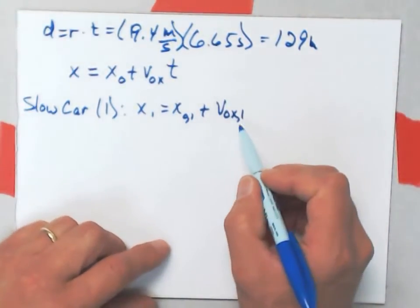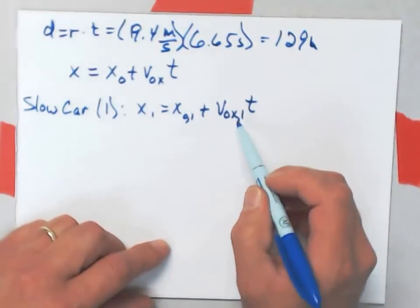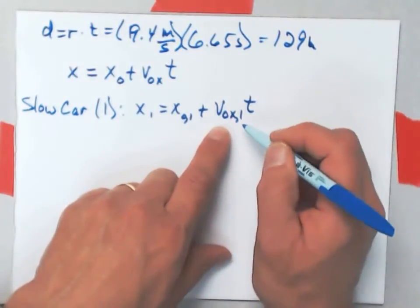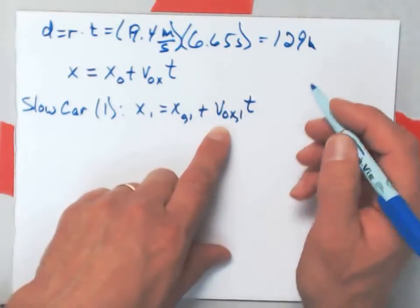Well, I know that this, times t, forgot that little detail. I know that this car, the slower car, the 56 kilometer per hour car is going...